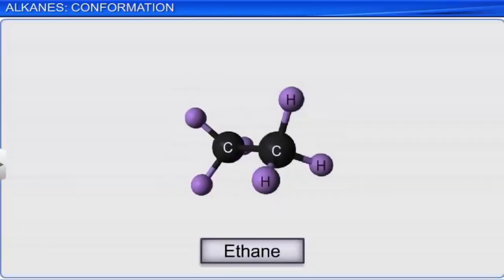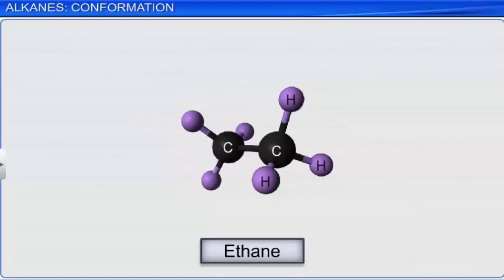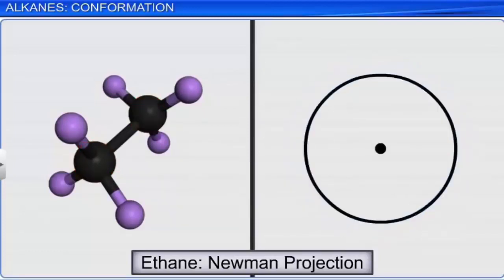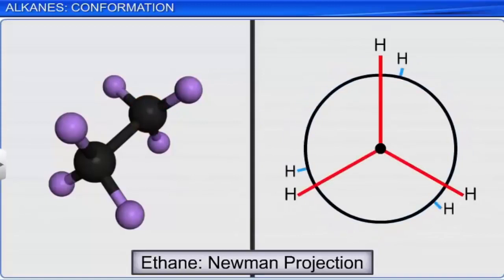In Newman projection, the carbon-to-carbon bond conformation is viewed head-on, that is, front to back. The carbon atom at the front is represented as a dot, and the carbon atom at the back is represented as a circle. The hydrogen atoms attached to the carbon atoms are shown by lines. The bond angle between these lines is kept at 120 degrees. The hydrogen atoms connected to the carbon atom in the front are represented by longer lines, and those connected to the carbon atom at the back are represented by shorter lines.